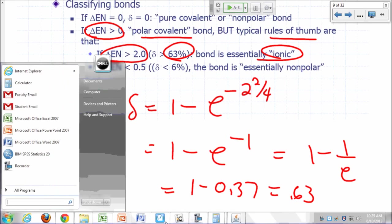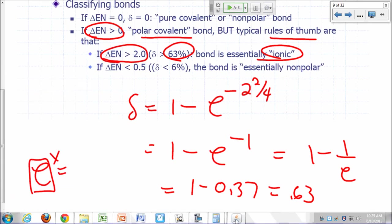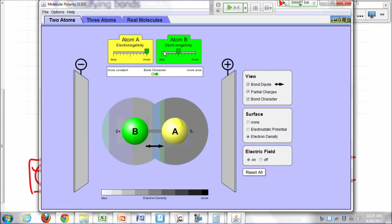So the larger the difference in electronegativity, the greater the ionic character. Here's a way of looking at it. If I make A way more electronegative than B, so you increase your partial charge, the molecule becomes more and more polar. So you say your bond is more ionic.